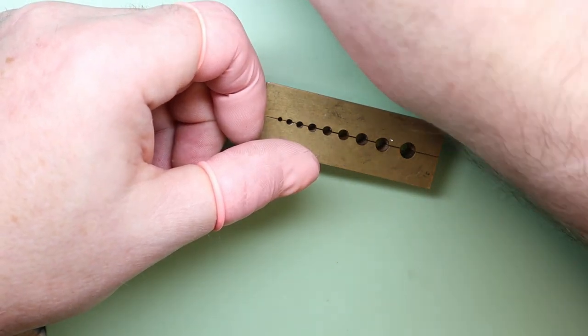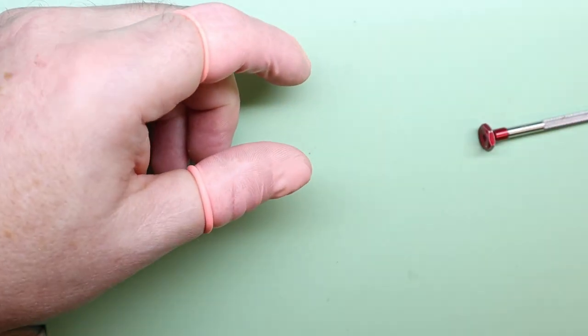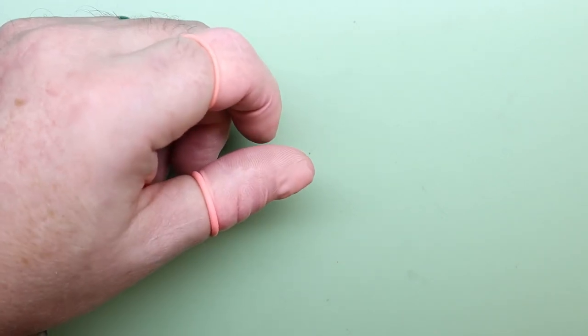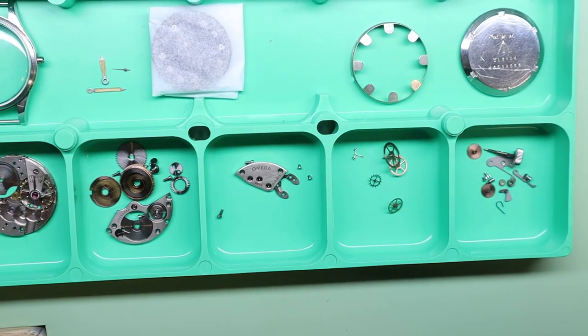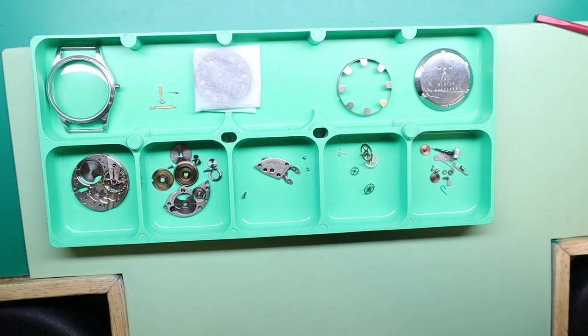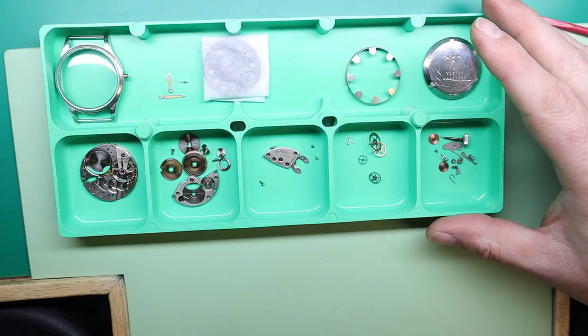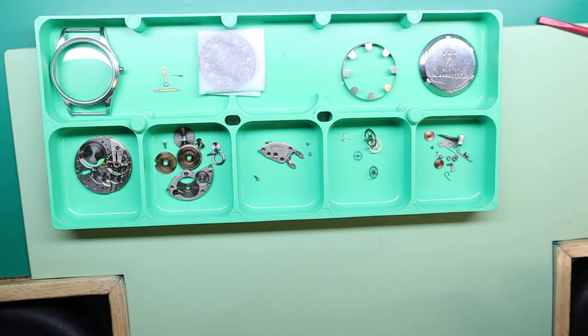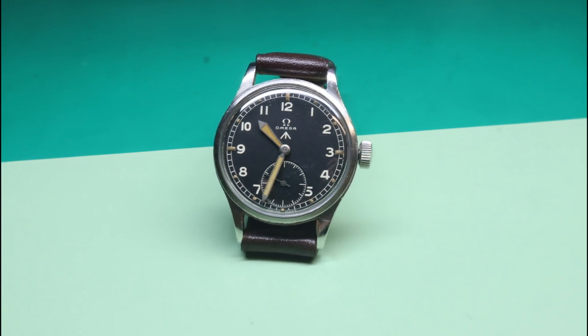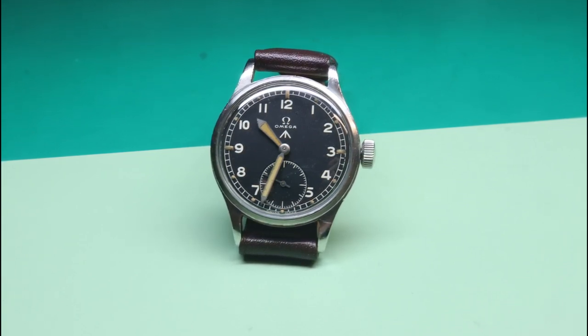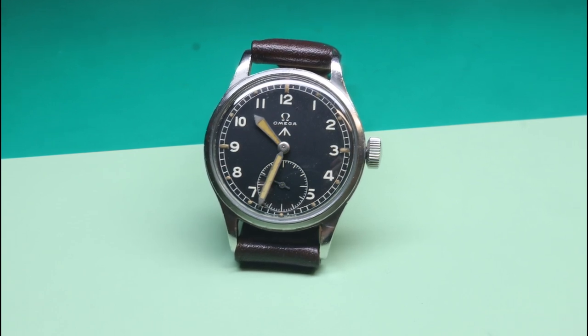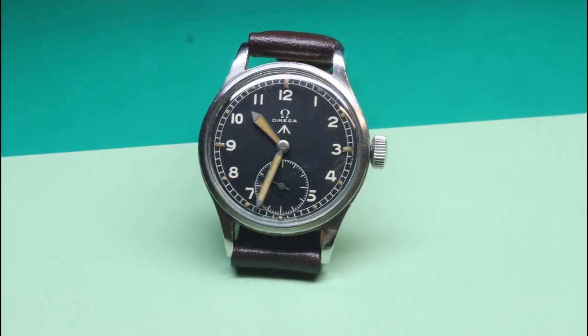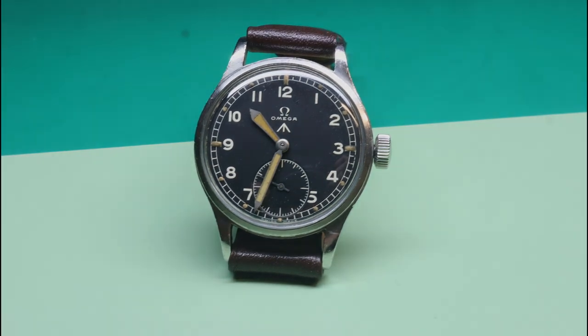Now all the parts are in the cleaner cleaning baskets and ready to go. Well, should I say they're in the cleaning tray ready to be put into the basket. So that's the watch completely broken down. All these parts will go into the cleaning basket, and once they're clean they'll come out and get ready to get reassembled. So be sure to come back and check for the second part of the video where we go through the reassembly of this movement.